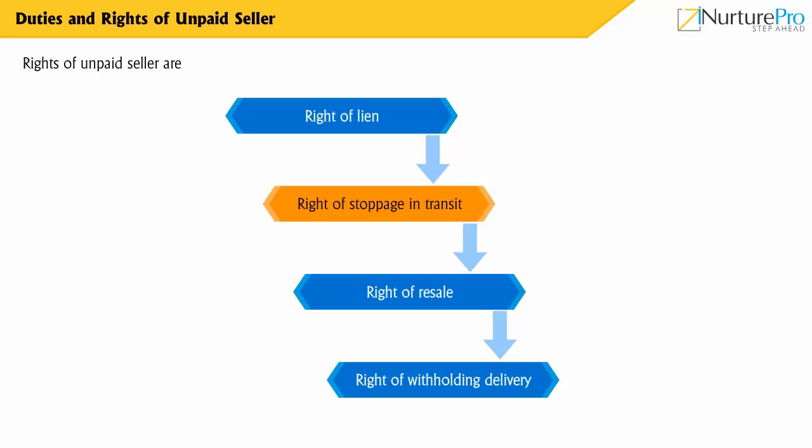Transit is the intermediate stage in the delivery of goods. An unpaid seller has the right to stop the goods even if he has parted with the goods. Due to insolvency of the buyer, an unpaid seller has the right to stoppage in transit when he has not received payment.